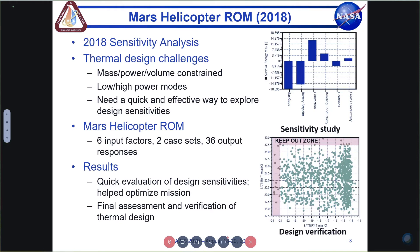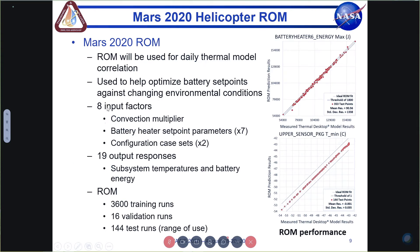The other aspect of the 2018 work was using the reduced order model for final assessment and design verification. With the design locked in, we created a reduced order model, provided expected input factor ranges, and ran thousands of simulations. The resulting plots — shown in the lower right — display battery minimum and maximum temperature results, each point representing one simulation. A keep-out zone is shown, and as the design evolved we worked to ensure all simulations stayed within that zone.